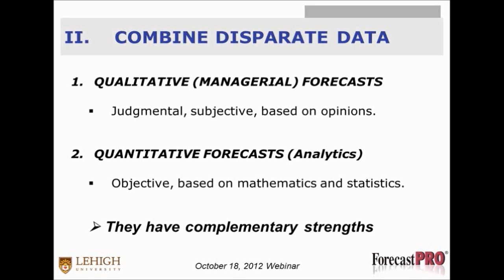The two broad categories are: first, qualitative or managerial forecasts, and second, quantitative analytics. The first are judgmental, subjective, and based on opinions. The second are objective, based on mathematics and statistics. They both have strengths and weaknesses, and I'm going to show you ways we can combine them to get the best results.